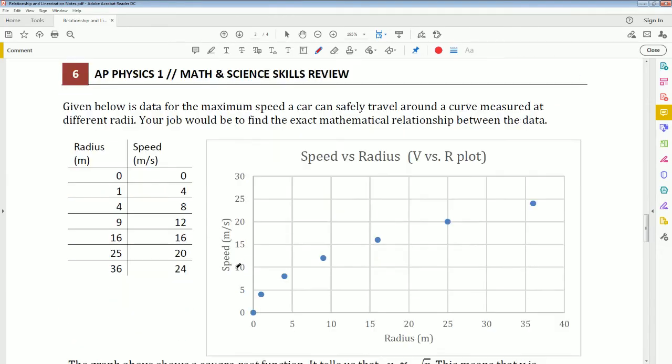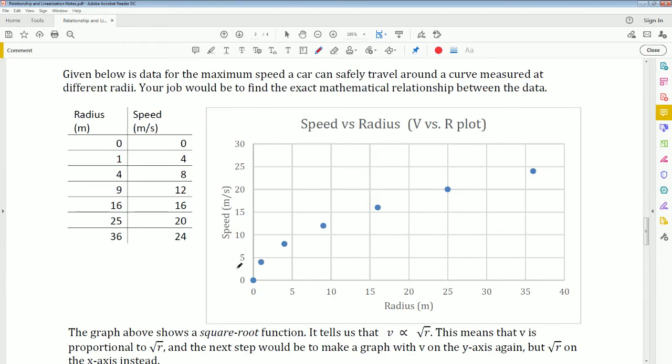I made your life easy. I'm going to show you an example, then I'm going to give you a cheat sheet at the end. If we draw the radius and the speed here, notice it curves like this. This behaves like a square root function. So what do we need to do?